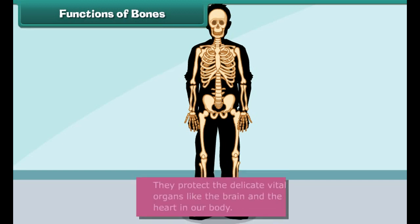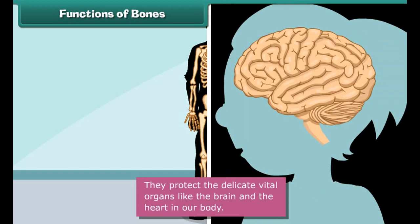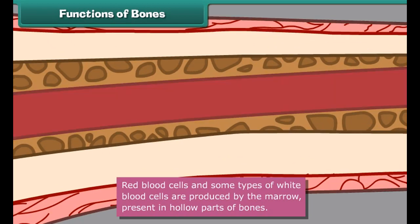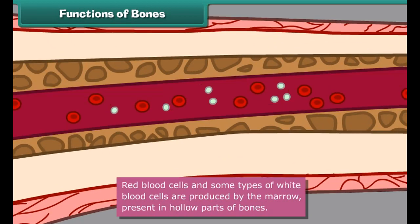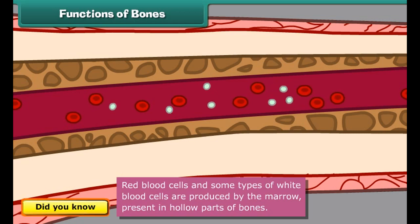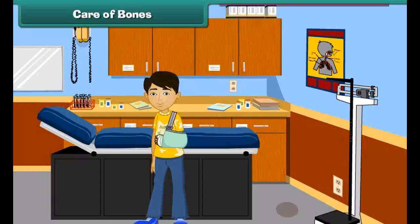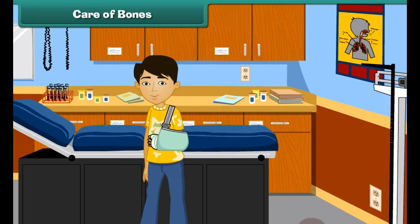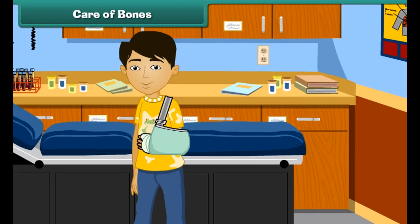What functions do bones perform? Come, let us know. Bones give shape and support to the body. They help in body movements. They protect the delicate vital organs like the brain and the heart in our body. Red blood cells and some types of white blood cells are produced by the marrow present in hollow parts of the bones.